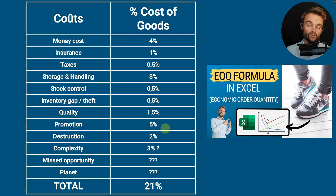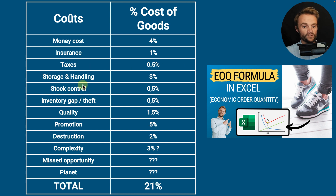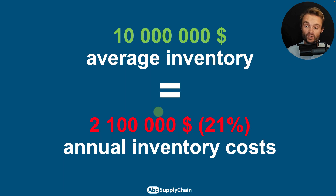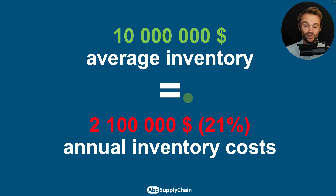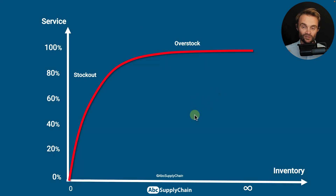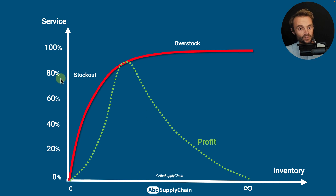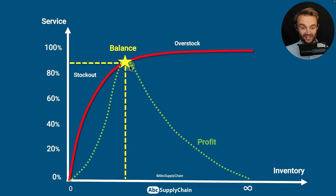So how much does your inventory really cost? List all 12 parameters and try to assign a value to each. You can group categories to keep it simple — don't try to be perfect. For example, if you have $10 million in average annual inventory and your total inventory cost rate is 21%, that's $2.1 million per year. If you reduce inventory by 10%, you save over $200,000. That's a very important number.